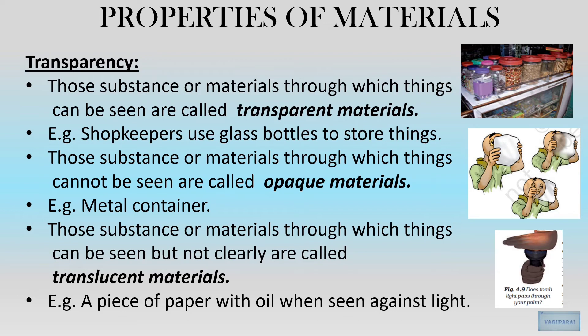Translucent material is one through which light passes only partially. For example, take a piece of paper, apply a little oil on it, and see light through it. You can find light passing partially through it — so this is a translucent material.